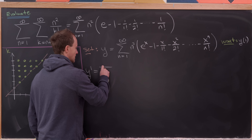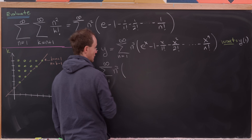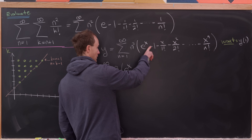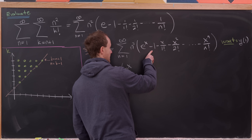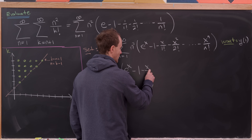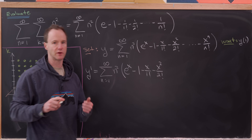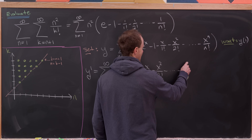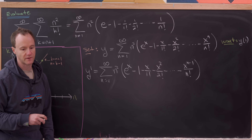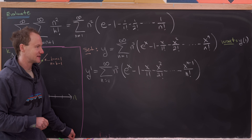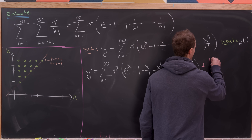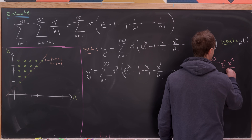Let's compute y prime. Taking the derivative: the derivative of e to the x is e to the x, the constant 1 goes to 0, and each subsequent term shifts down. So we get minus 1 minus x over 1 factorial minus x squared over 2 factorial and so on, down to x to the n minus 1 over n factorial as the last remaining term. Now let's add and subtract the last term: plus and minus the sum as n goes from 1 to infinity of n squared times x to the n over n factorial.